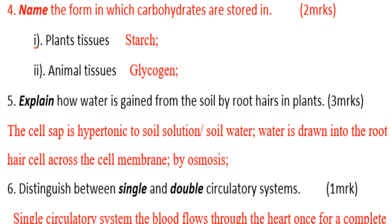Number five: explain how water is gained from the soil by roots. In plants, the cell sap is hypertonic to the soil solution, so water is drawn into the root cells across the cell membrane by osmosis.